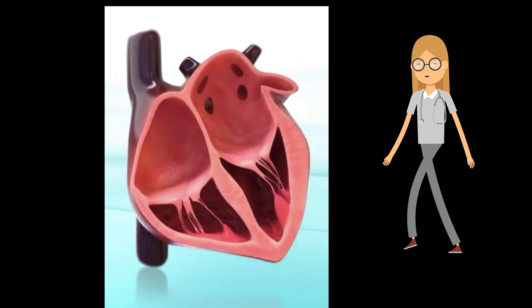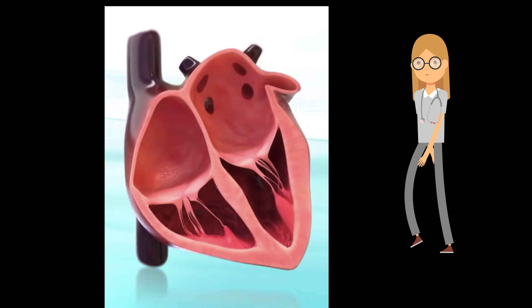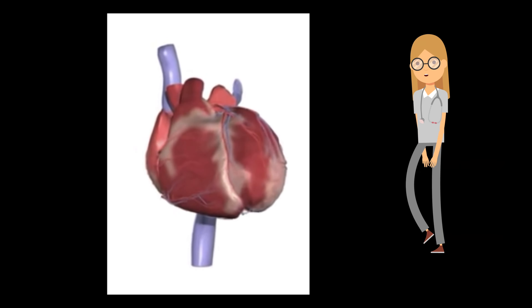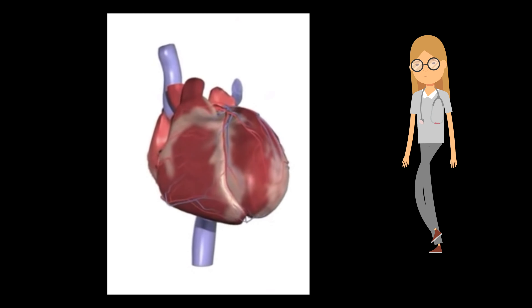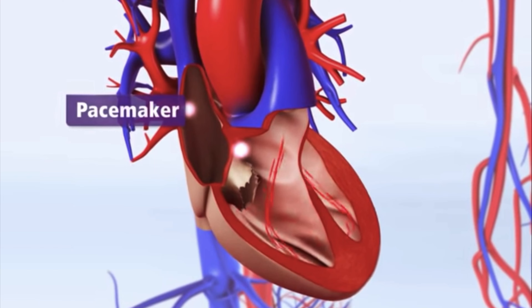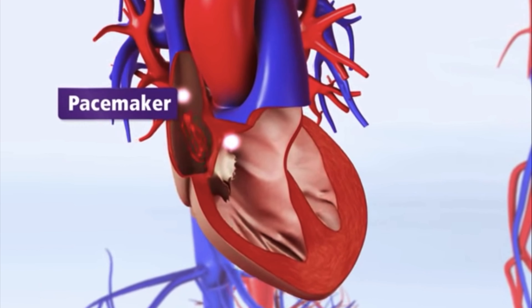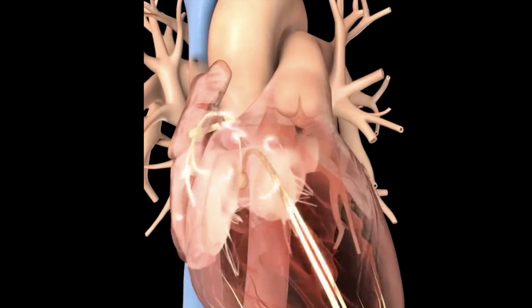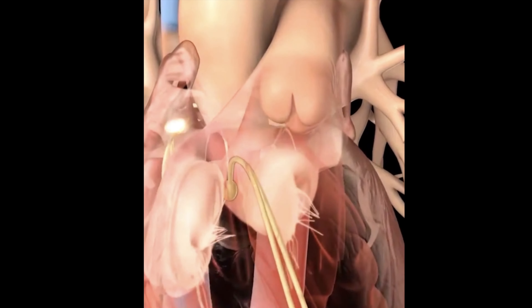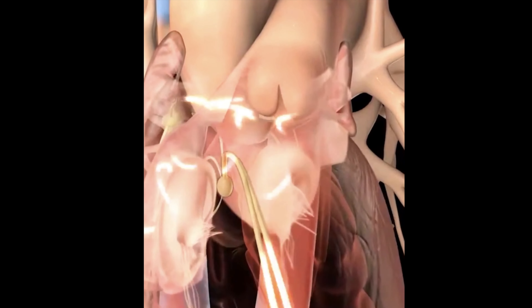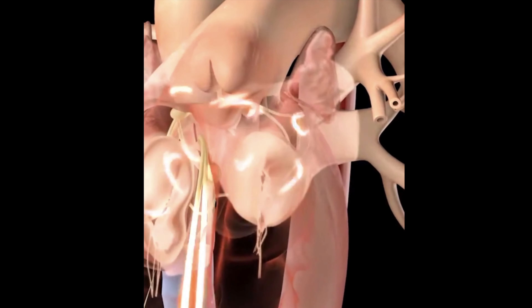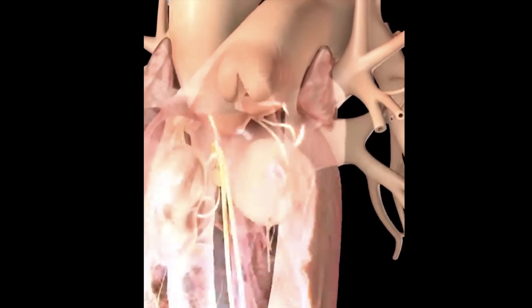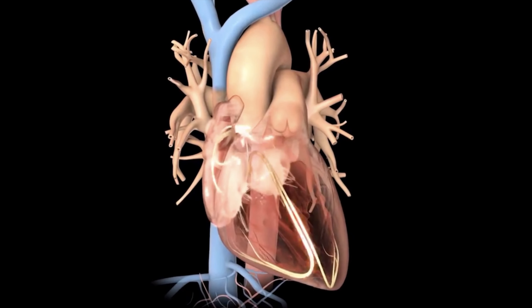Because the electrical impulses are so fast and chaotic, the atria cannot contract or squeeze blood effectively into the ventricles. Instead of the impulse traveling in an orderly fashion through the heart, many impulses begin at the same time and spread through the atria, competing for a chance to travel through the AV node. The AV node limits the number of impulses that travel to the ventricles, but many impulses get through in a fast and disorganized manner.